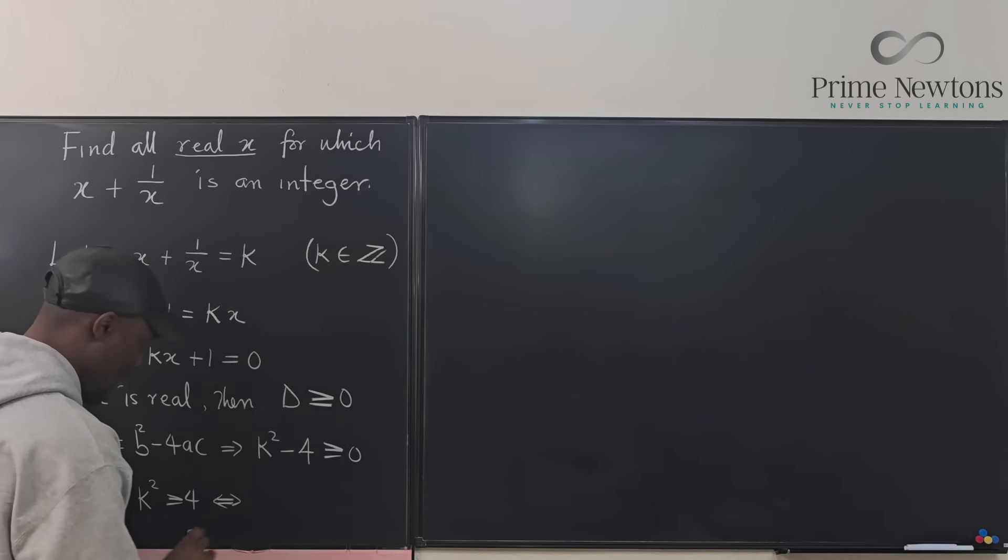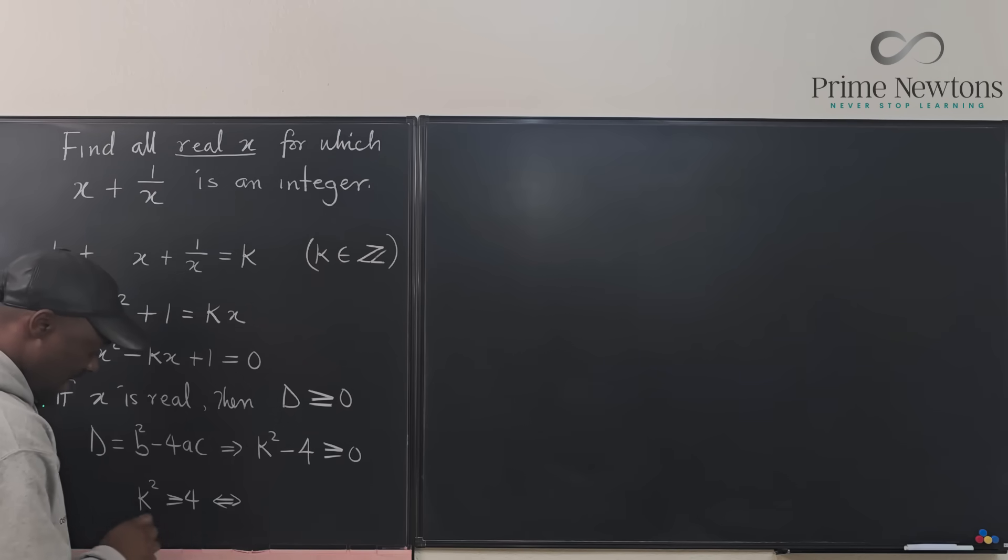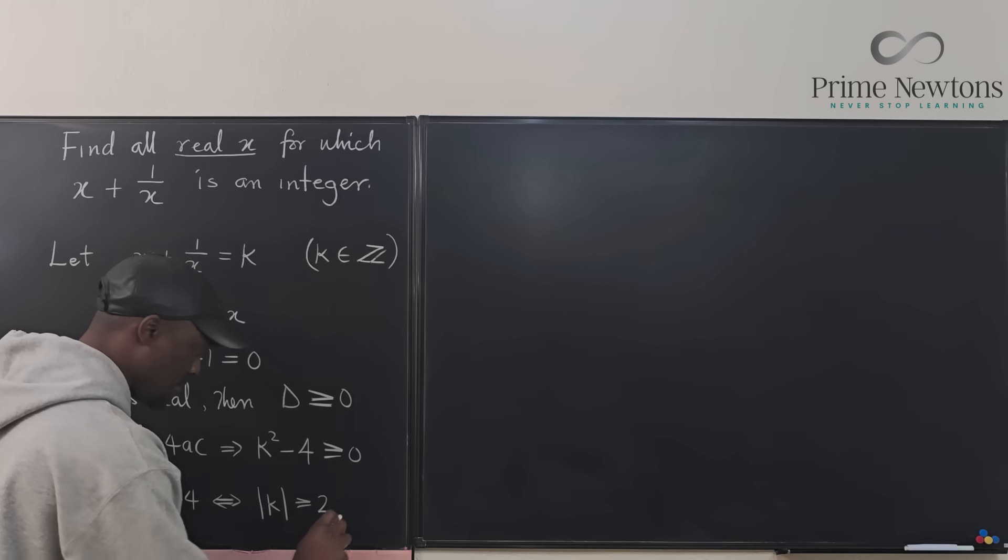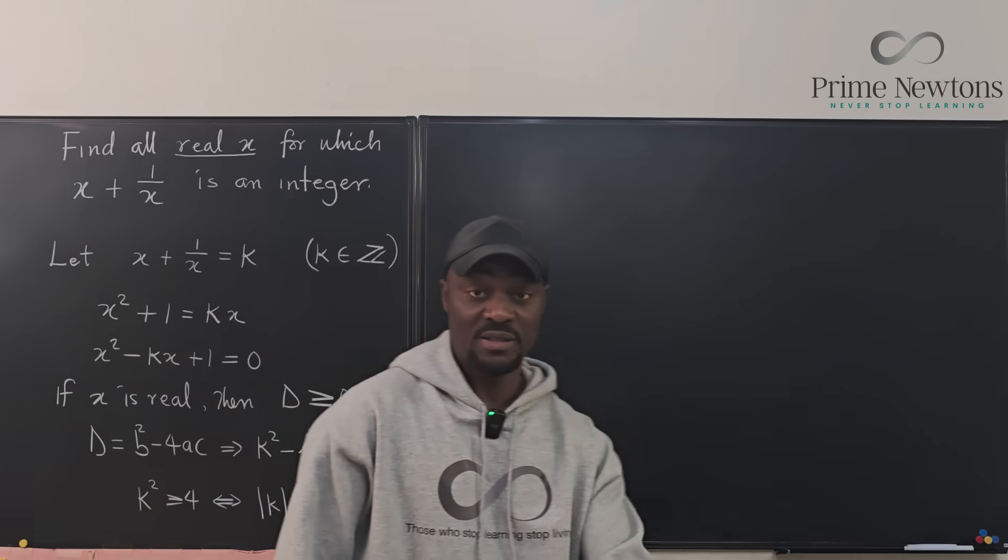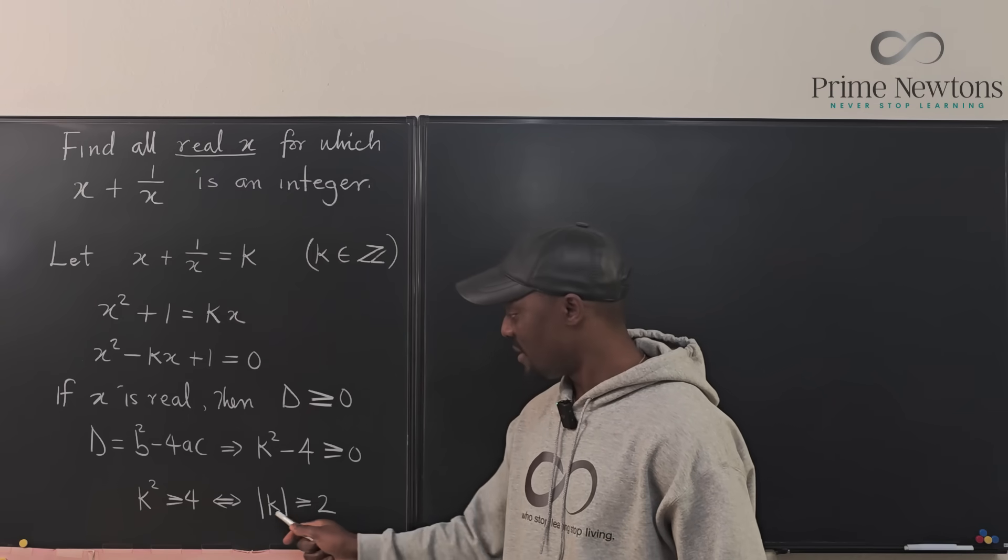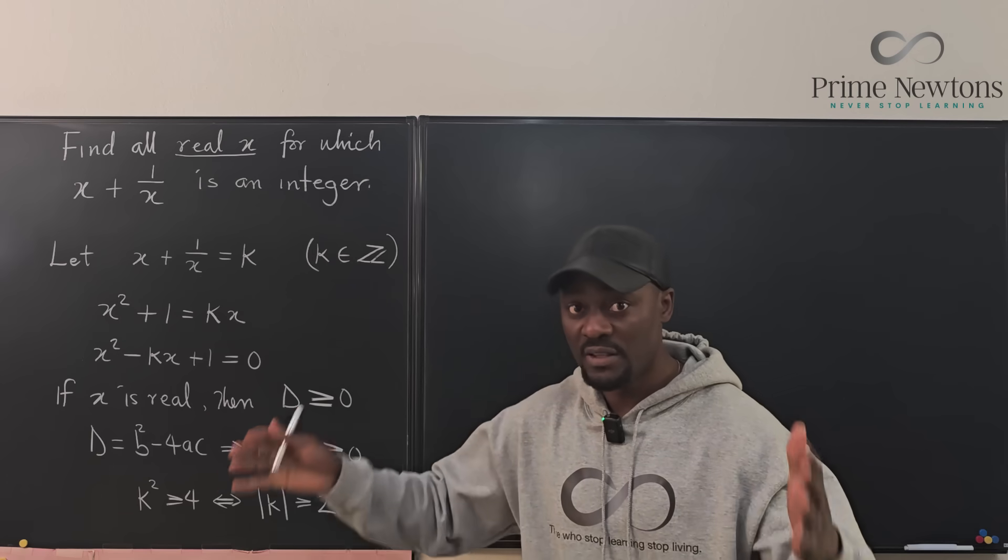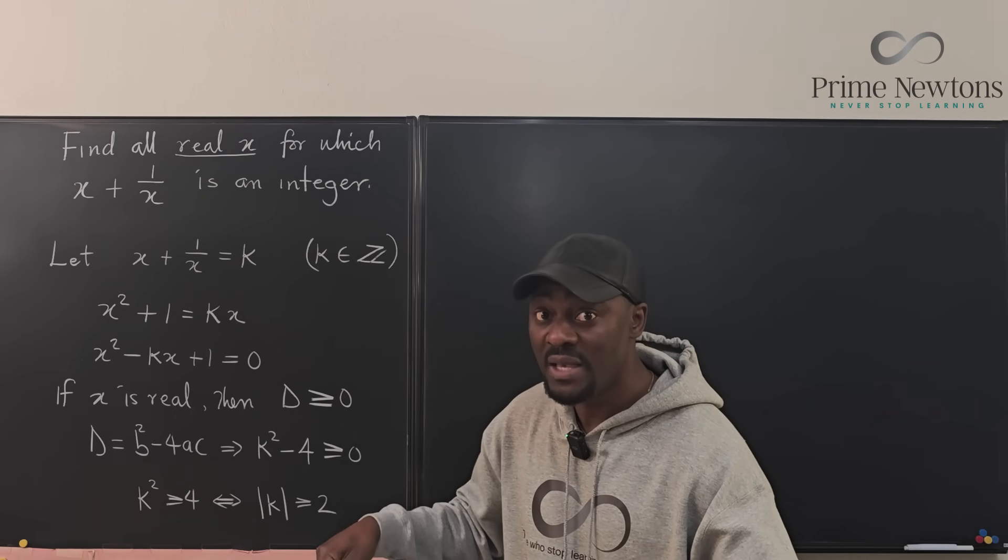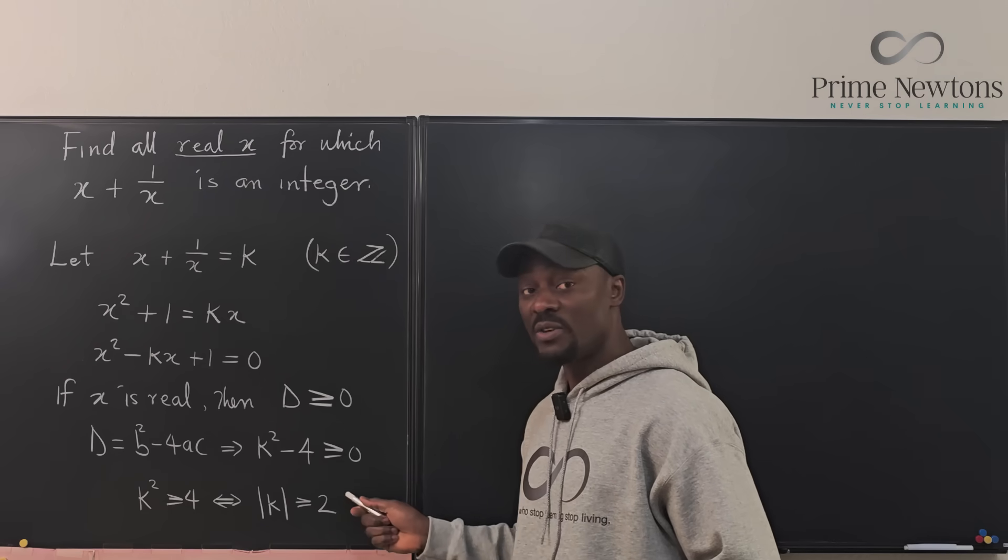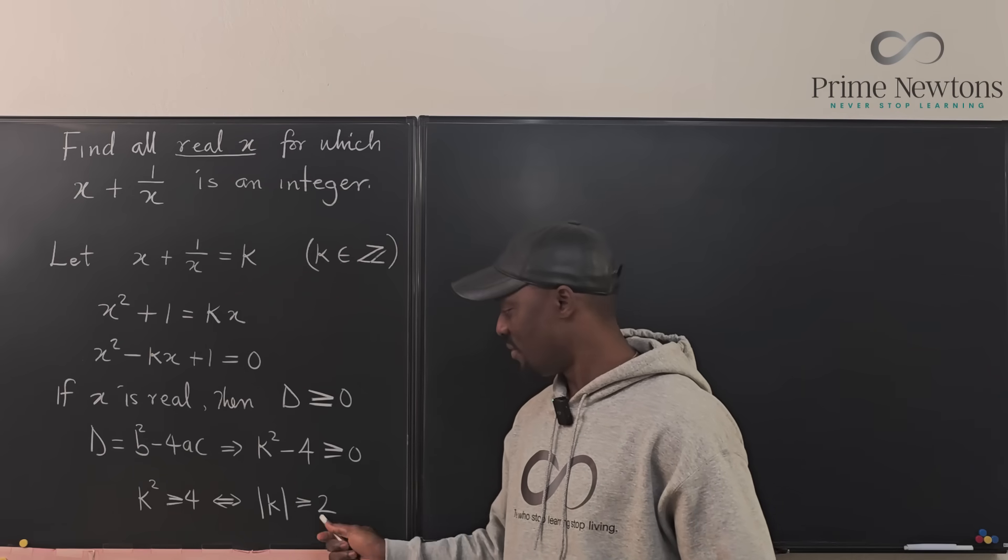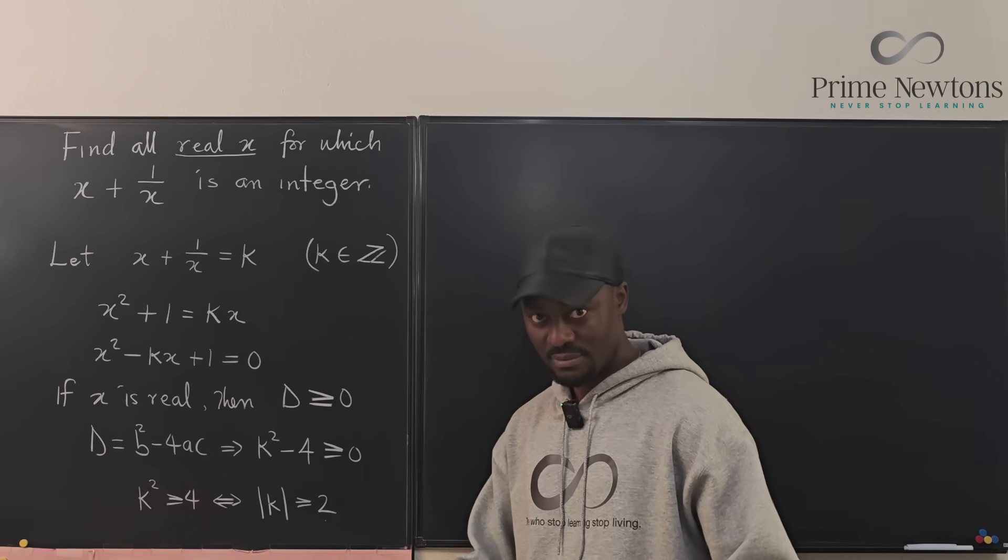And this is only true if, when you take the square root of both sides, you're going to have the absolute value of k is greater than or equal to 2. So when it comes to inequalities, this is a better way to solve this kind of equation. The square root of a square is the absolute value of the base, whereas the square root of any number is just the principal root, which is the positive version.